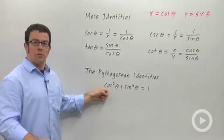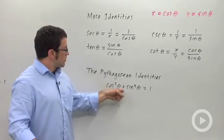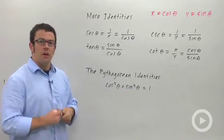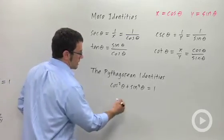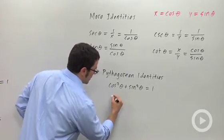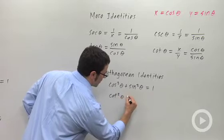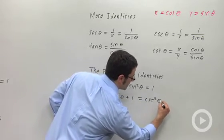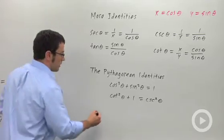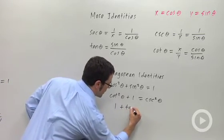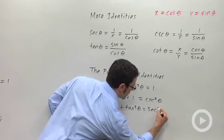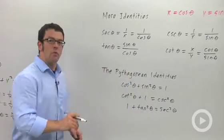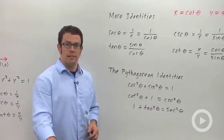Now you remember the main Pythagorean identity, cosine squared plus sine squared equals 1. There are actually two other Pythagorean identities. One of them is cotangent squared theta plus 1 equals cosecant squared theta. And the other is 1 plus tangent squared theta is secant squared theta. And we'll be using these Pythagorean identities later.